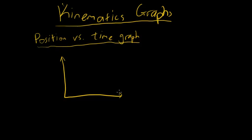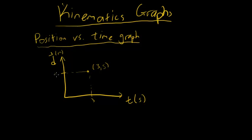A position-time graph has position on the y-axis — the symbol for position is d with a vector hat — and time (t) on the x-axis in seconds, while position is in meters. So when we have a point at (3, 5), that means at t equals three seconds the object's position relative to the origin is five meters.